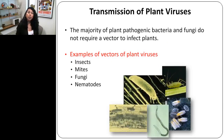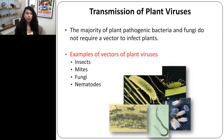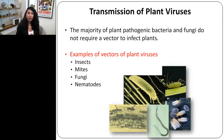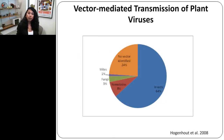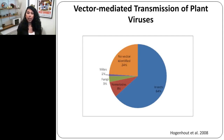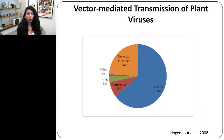The majority of pathogenic bacteria and fungi do not require a vector to transmit from one plant to another. But most plant viruses do in fact need vectors or organisms to transmit them from one host to another. These vectors include insects, mites, fungi, and nematodes. Among these various vectors, insects occupy predominantly the largest group, comprising about 64% of all known vectors that transmit plant viruses.